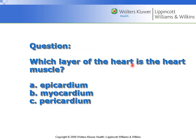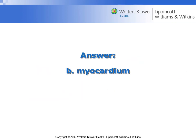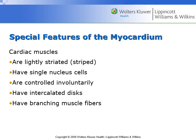The myocardium is the muscle layer of the heart. Cardiac muscles are less striated, have single-nucleus cells, and are controlled involuntarily. This is very important — if the heart were under voluntary control, we would stop beating the moment we fell asleep. The involuntary mechanism keeps us alive while we are sleeping.